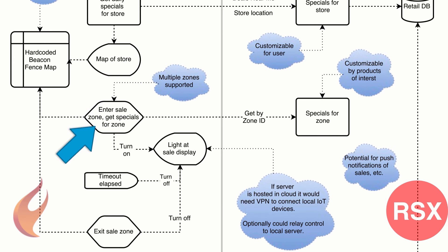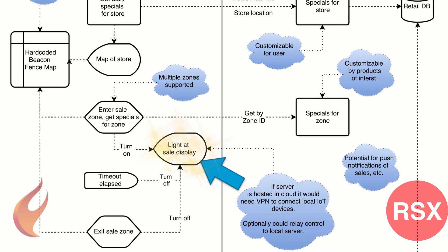As the user enters different zones — different departments in the store — we will send a notification from the client application to the RAD server, letting the server know what zone they've entered. That gives the server an opportunity to respond by sending down specials for the zone that they're in. Also, in some zones, we're going to have a light that comes on to alert the customer to a special offer. As the customer enters the zone and gets near this light, it's going to come on so they can see what offer is available.